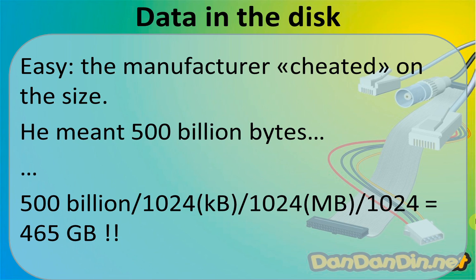The manufacturer means 500 billion bytes. Of course, you can sell a disk labeled 500 gigabytes more easily than one labeled 465. Seagate was the first, in the 1980s, to invent this system to make hard drives look bigger, and others followed. So if you take 500 billion, divide by 1024 three times, you get 465 gigabytes.